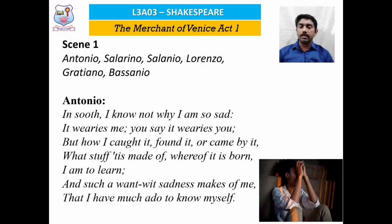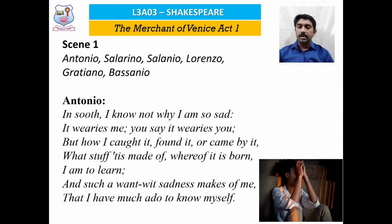In Scene 1, we come across characters like Antonio, Salarino, Solanio, Lorenzo, Gratiano, and Bassanio. This is the opening line of the play, spoken by Antonio, which reveals his character. He says: 'In sooth I know not why I am so sad. It wearies me. You say it wearies you. But how I caught it, found it, or came by it, what stuff it is made of, whereof it is born, I am to learn. And such a want-wit sadness makes of me that I have much ado to know myself.'